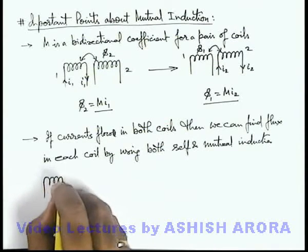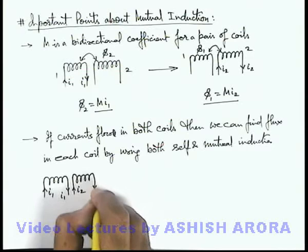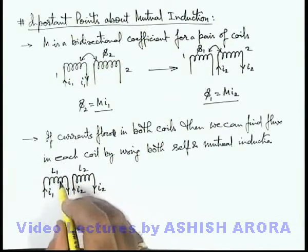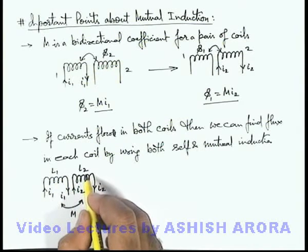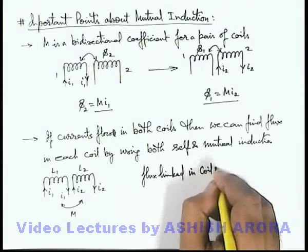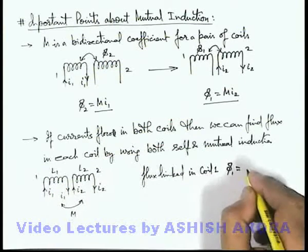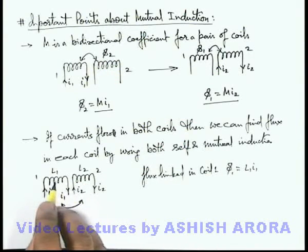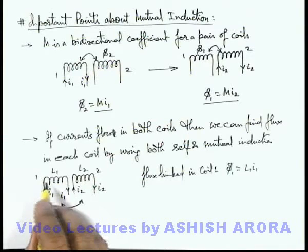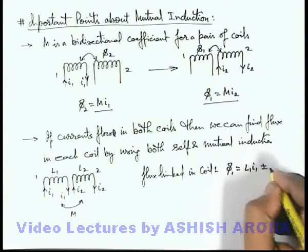Consider the situation where we are given 2 coils in which the currents flowing are i-1 and i-2. For the pair of coils the coefficient of mutual induction is M, and for the 2 independent coils the coefficients of self induction are L-1 and L-2 respectively. Then the flux linked in coil 1 — due to current i-1 a flux will be linked with itself written as L-1·i-1, and due to current i-2 a flux will also pass through the first coil, written as plus or minus M·i-2.